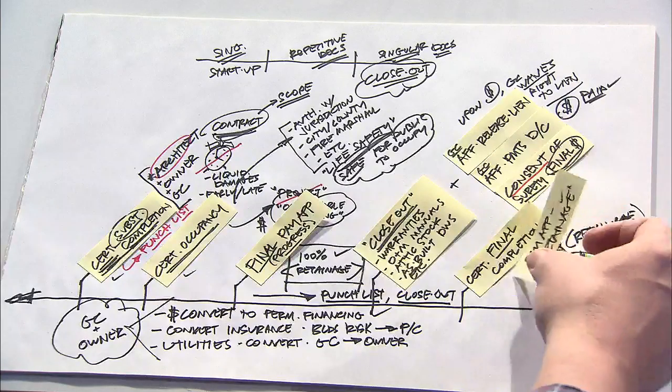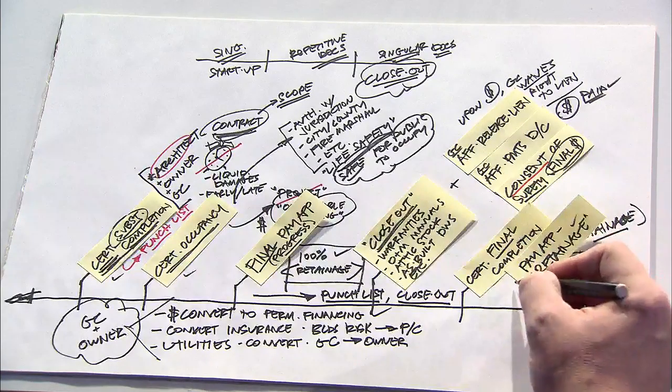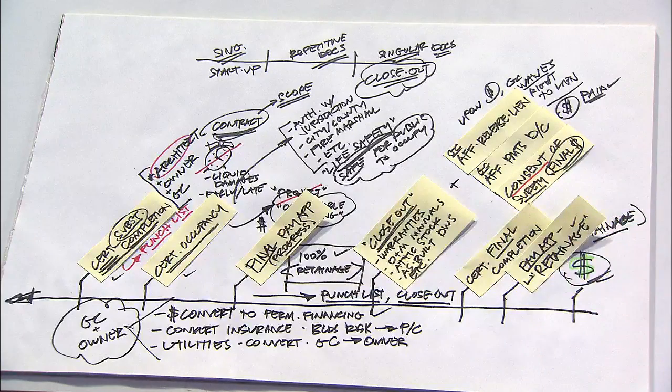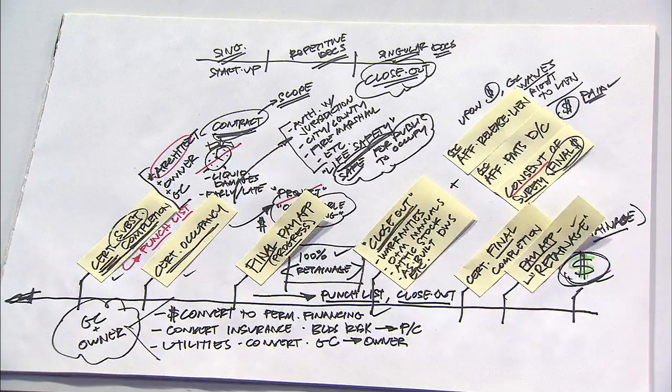And then once that certificate has been issued, then the contractor can issue his final and last pay application for the amount of the retainage after which the owner would then make the last payment.